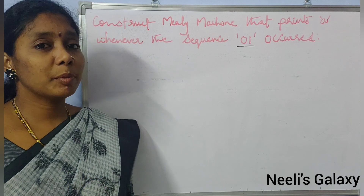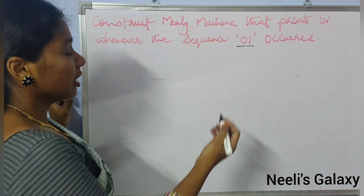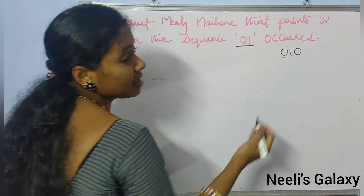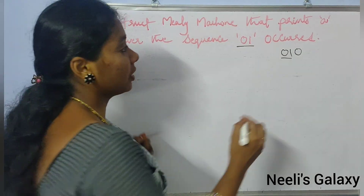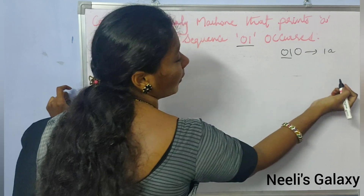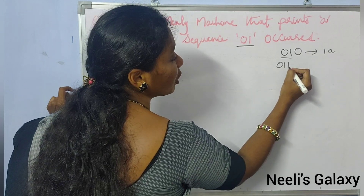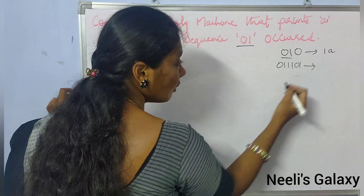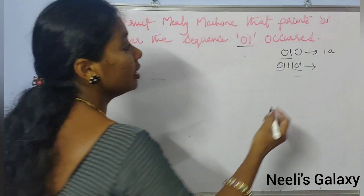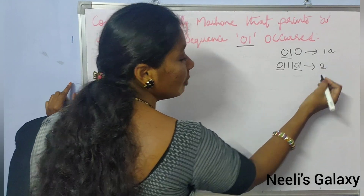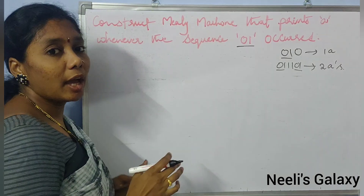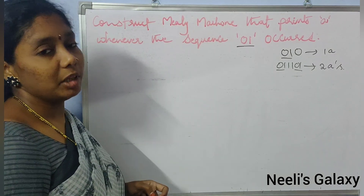So, 0-1 will have A printed. For example, consider the string 0-1-0. The output of the Mealy machine should have 1A. If the sequence is like 0-1-1-0-1 or 0-1-0-1-0-1, then the output of the Mealy machine should consist of 2 A's. Like this, we need to construct the Mealy machine.